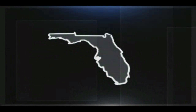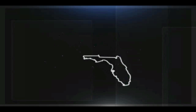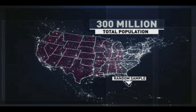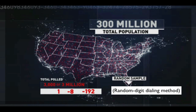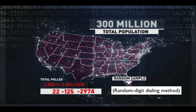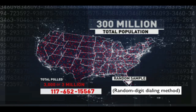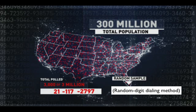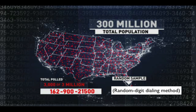An opinion poll might focus on a particular state such as Florida, or the entire U.S. population of more than 300 million people. Pollsters use computer programs to generate a random list of a few hundred or a few thousand telephone numbers from the larger group, and then they call each number to survey people for their opinions.